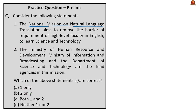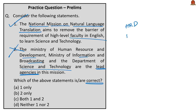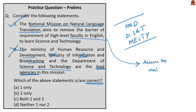The seventeenth question is about the National Mission on Natural Language Translation. Statement one says it aims to remove the barrier of requiring high-level knowledge of English to learn science and technology — this is correct. Statement two says the Ministry of HRD, Ministry of Information and Broadcasting, and Department of Science and Technology are the lead agencies — this is incorrect; the correct ministry is the Ministry of Electronics and Information Technology, not Information and Broadcasting. The mission provides access to materials in English and native Indian languages. The answer is option A: one only.